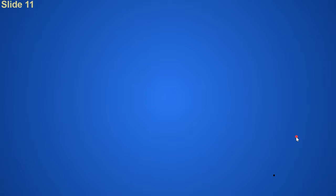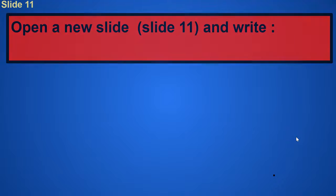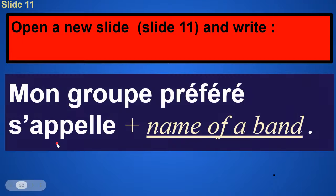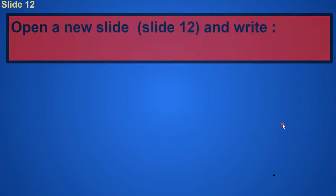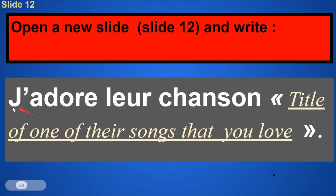Slide number eleven, you're going to put your favorite band. Mon groupe préféré s'appelle, the name of the band. Make sure you capitalize the name of the band and then period. And then a song by that band that you like with J'adore leur chanson, open quotation mark, title of a song from that band that you love, close quotation mark, period. That's slide number twelve.